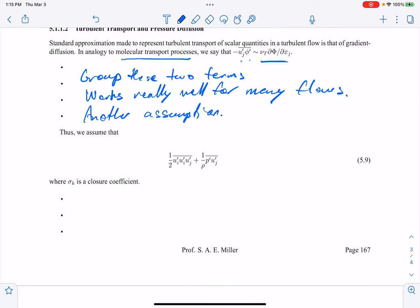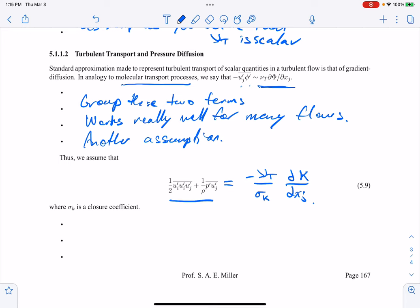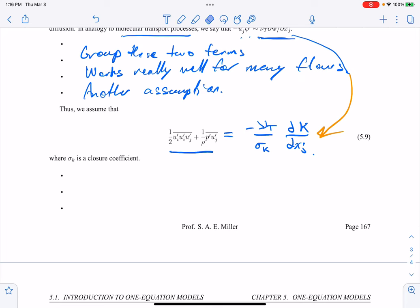How would that look? That would look sort of like this equation here, where we take these two terms, the triple correlation and the pressure velocity correlation, and we'll model it as a negative of eddy viscosity divided by a coefficient, which is a closure coefficient, times a derivative of k in these spatial directions, partial k partial xj. So you see, here's this analogy. They're just going to lump them two and write them this way. This is some DNS results. You can find these correlations.